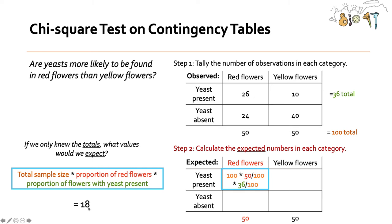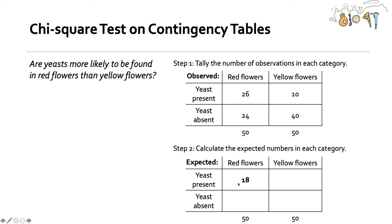So again, what this is, is our prediction of if we only knew the totals, what value would we expect? How many red flowers would we expect to have yeast present without actually knowing the real value? So it's 18. And we can do that with all of these other categories, what we would guess if we just knew our totals.